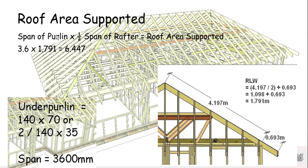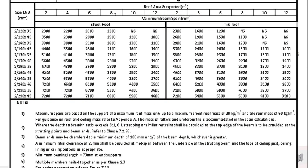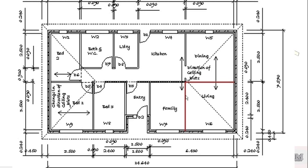The maximum span of the purlin we worked out to be 3.6m, and half the span of our rafter we worked out earlier to be 1.79m, giving us roughly 6.4 — just on six and a half square metres of roof being supported on that beam. Going back into the table, we have 6 but the next one up is 8, so we have to use 8 as our square metre value. Then it wants to know the maximum span of the beam — looking at our plan, the maximum span is 3.5 metres.